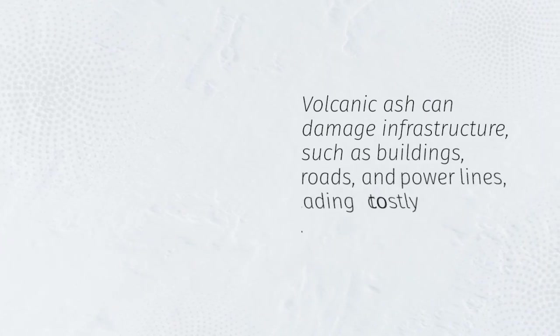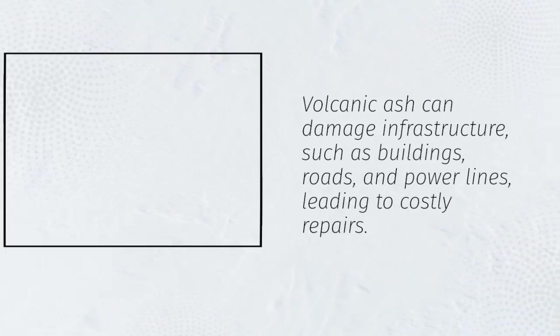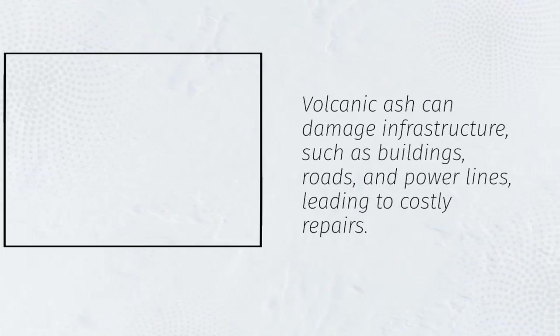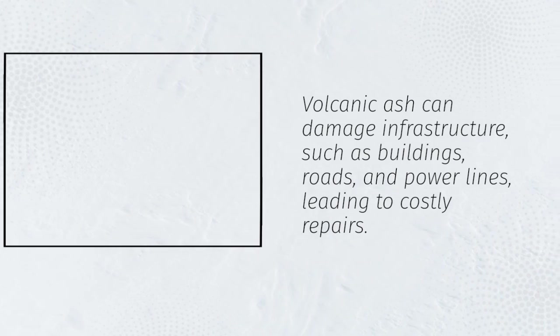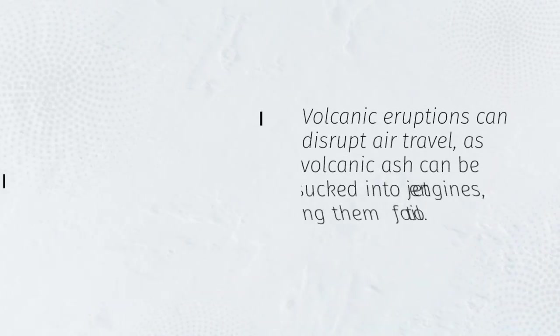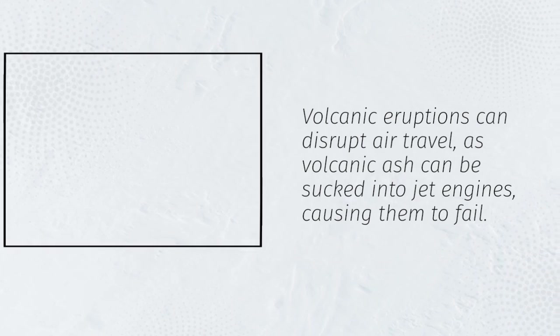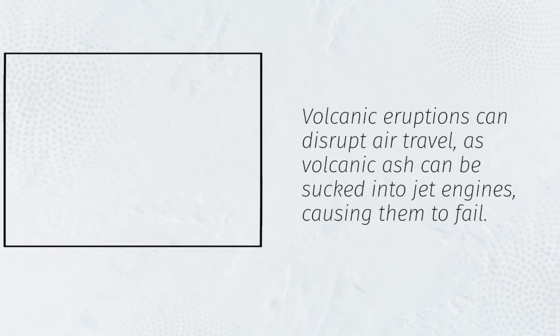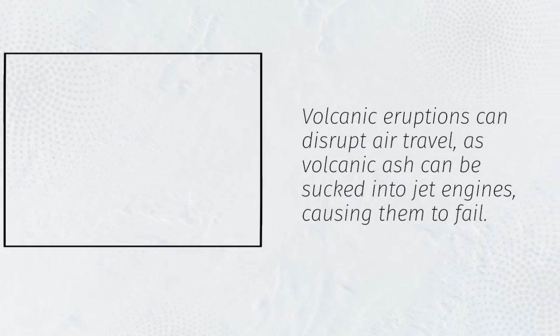Volcanic ash can damage infrastructure, such as buildings, roads, and power lines, leading to costly repairs. Volcanic eruptions can disrupt air travel, as volcanic ash can be sucked into jet engines, causing them to fail.